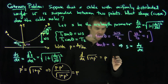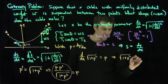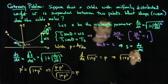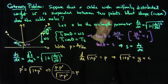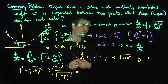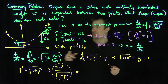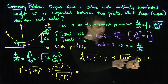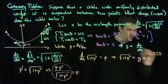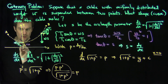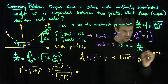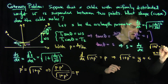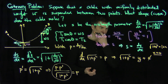We can integrate immediately and conclude that the square root of 1 plus P squared equals y plus a constant C. Now, at x equals zero, dy/dx equals zero, so P equals zero, and the y-height is one. Plugging in: the square root of 1 plus 0 equals 1 plus C, which tells us that C equals zero.